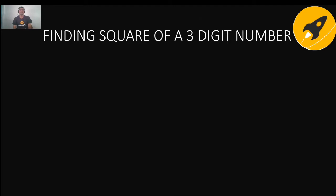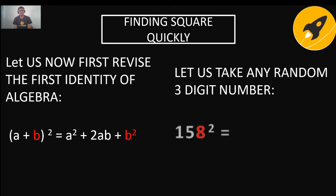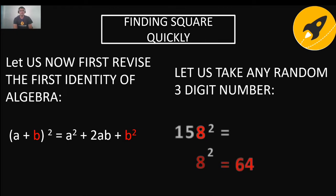Moving on to finding the square of a three-digit number. Tricks have limitations — different tricks apply to different number sizes. For a three-digit number, we again divide it into two parts: the first part is a single digit, and the second part is two digits treated as one number. For example, for 158²: b = 8, a = 15.